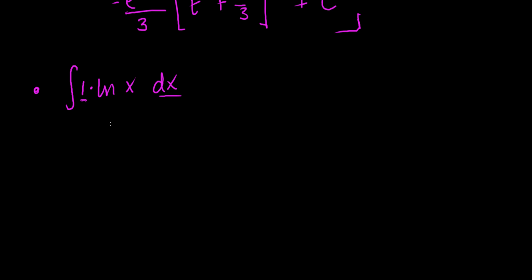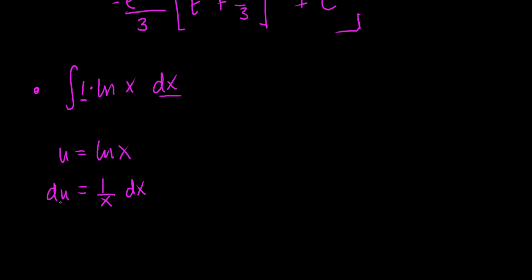Finding u and dv should be straightforward: ln(x) dx can't be dv because we don't know how to integrate it — that's the problem itself. So u equals ln(x), and du equals 1 over x dx — the derivative of ln(x) is 1 over x. Then dv equals 1 times dx, which is just dx, and integrating gives v equals x.